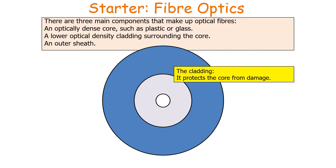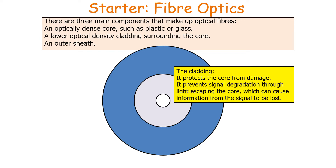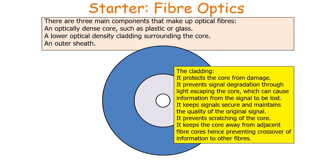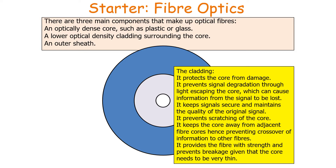Cladding has multiple uses. Firstly, it protects the core from damage. Secondly, it prevents signal degradation from light escaping the core — if light escaped, the information from the signal could be lost. It also keeps the signal secure and maintains the quality of the original signal. In addition, the cladding prevents scratching of the core, keeps the core away from adjacent fibre cores to prevent crossover of information, and provides strength to prevent breakage, as the core itself tends to be very thin with diameters on the order of micrometres.